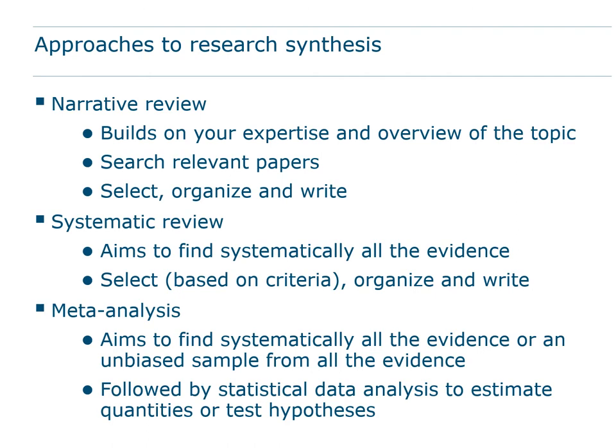Because of the risk of selection bias, people have come up with the idea of systematic review. A systematic review is based upon developing a search equation that aims to find systematically all the evidence — all the relevant papers — in a database like Web of Science or Scopus. After you have all the papers, you read them, organize the material, and write your paper. Meta-analysis adds to this a step of statistical data analysis to estimate quantities or test hypotheses.